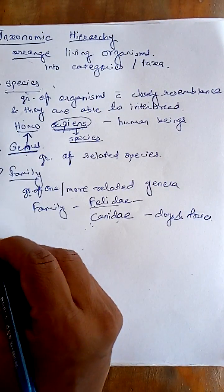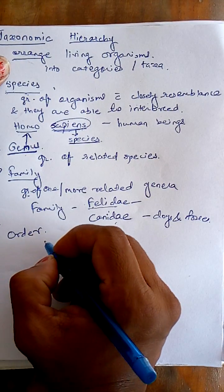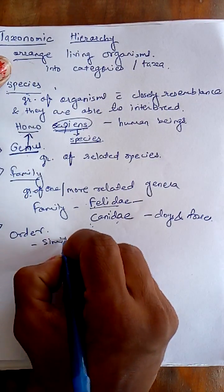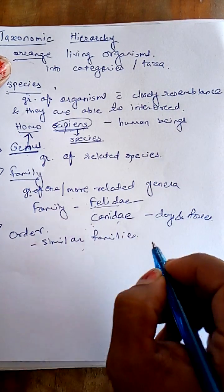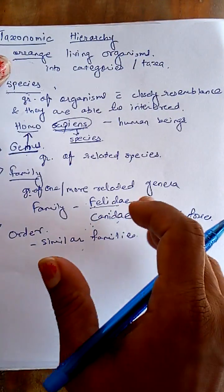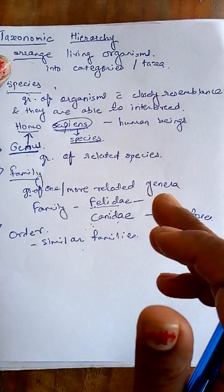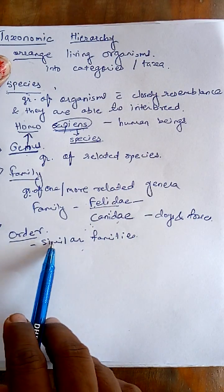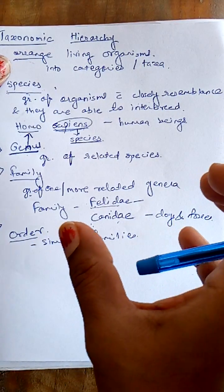The next one is the order. Order is the basic taxonomic category which includes similar families, sub-orders, infra-orders, super-families, and infra-classes. All these remaining categories are included under the order. In order, we make a group of similar families and collectively call it as the order. For example, we have the two different families — Felidae and Canidae.